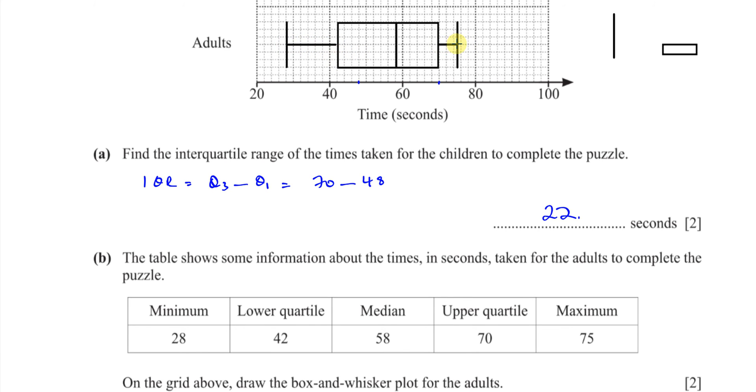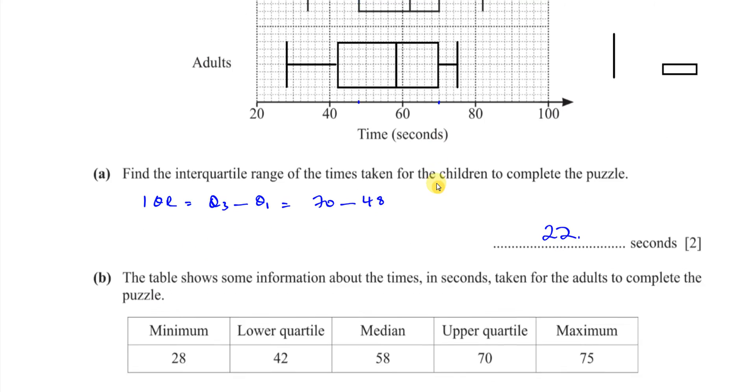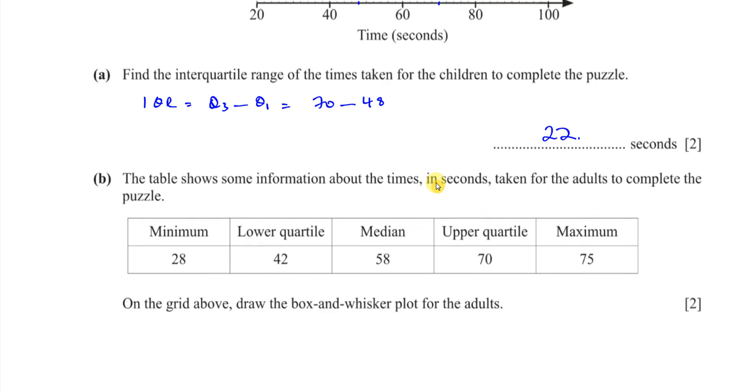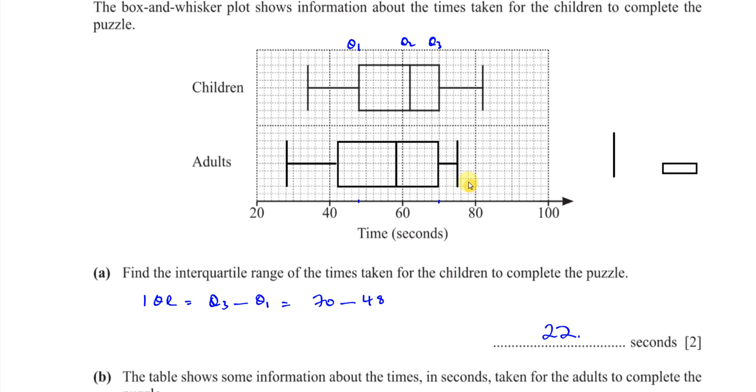That looks like it's half. And then I join the box to the lines here with the whisker. Join these together. And there we have our box and whisker plot for the adults. For the adults. So do they tell us to, no, they don't tell us to compare the data. But for example, if they told us to compare the data...